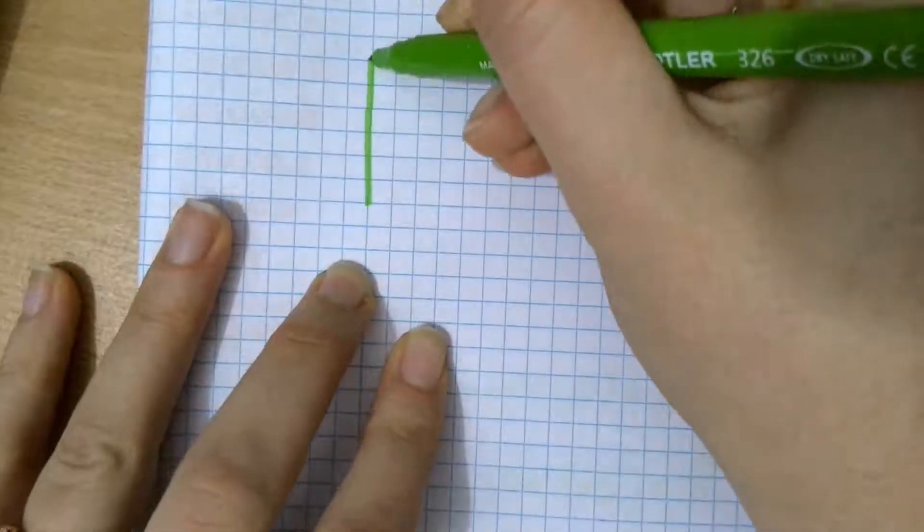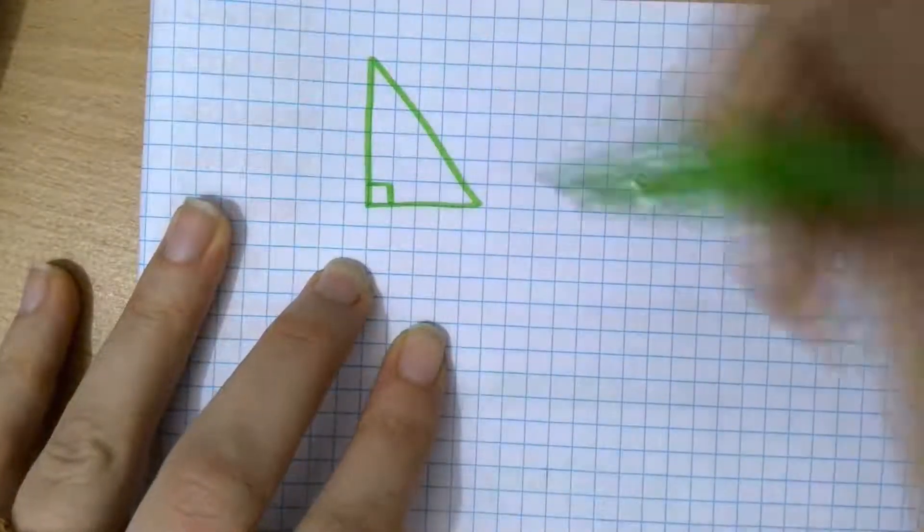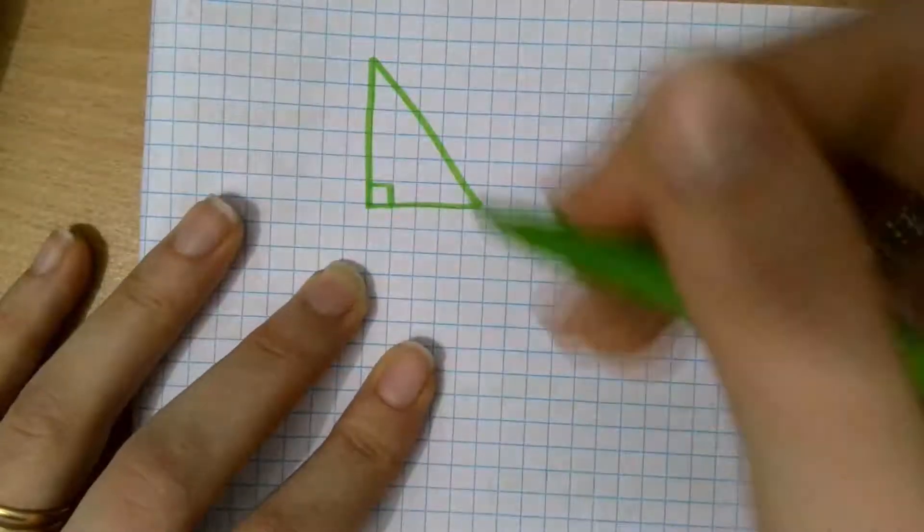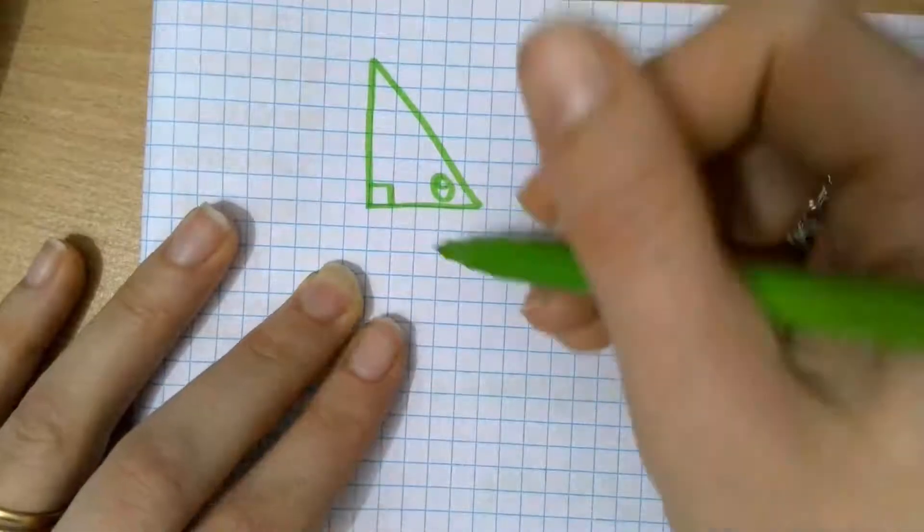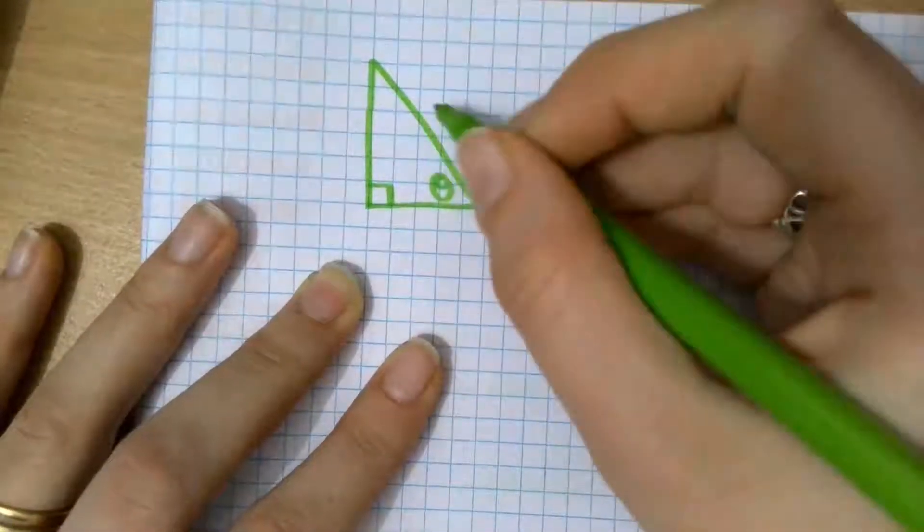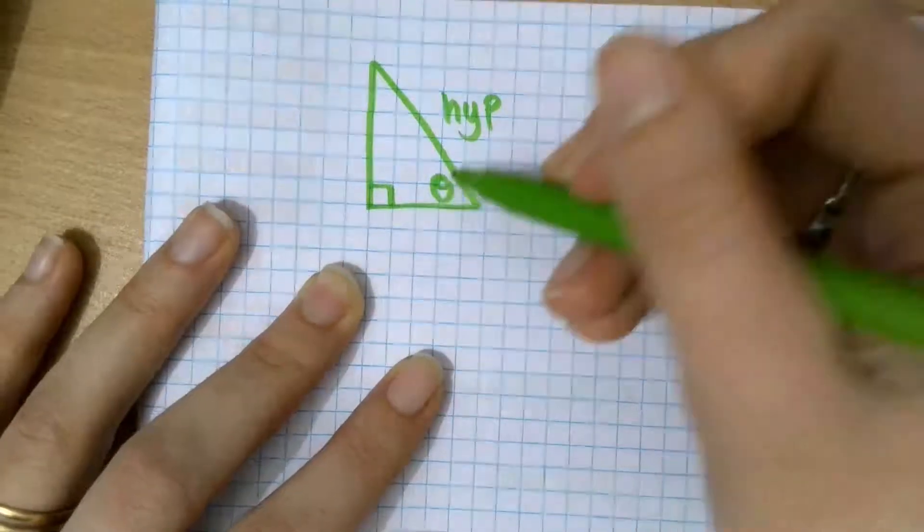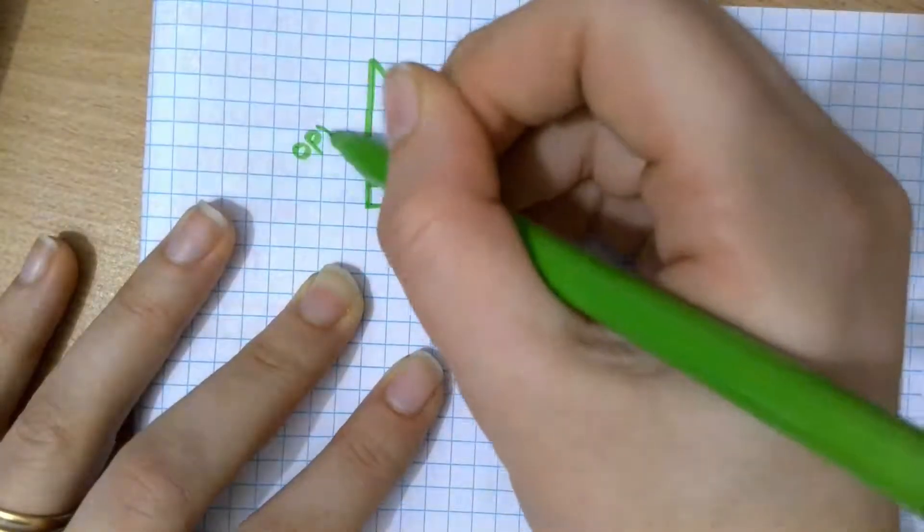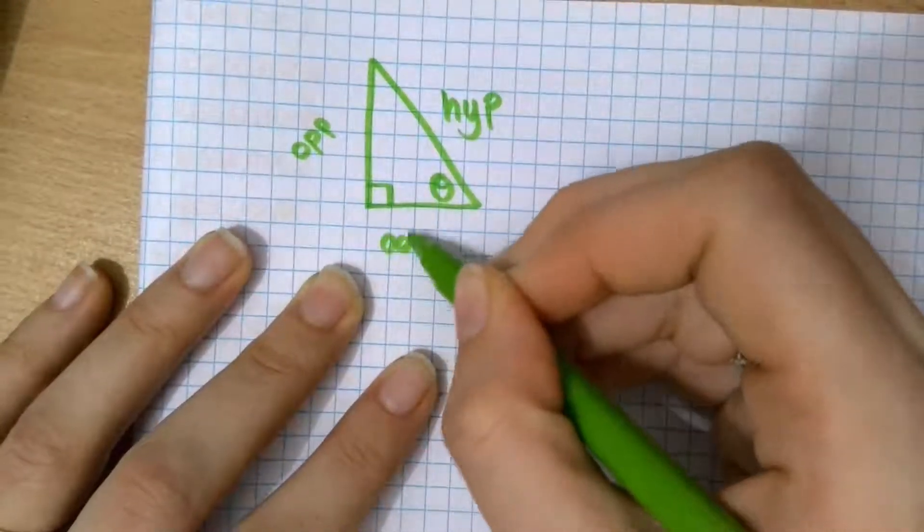So just a quick recap, when we've got a right angle triangle, which we show with the little square in the right angle, an angle that we either know or want to find, we label the sides. The longest side opposite the right angle is the hypotenuse. The side opposite the angle that's marked is called the opposite side, and the side next to the angle that's marked is called the adjacent side.